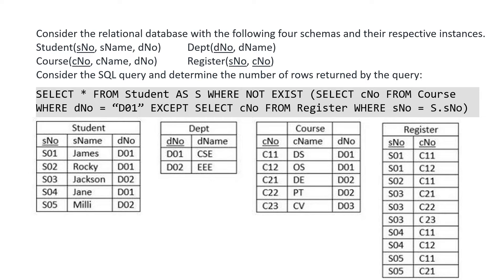This is a DBMS question from the topic relational databases. We have been given four relations: student, course, department, and register. The tables have been given below and we have been given an SQL query for which we will be determining the number of rows returned by this query.